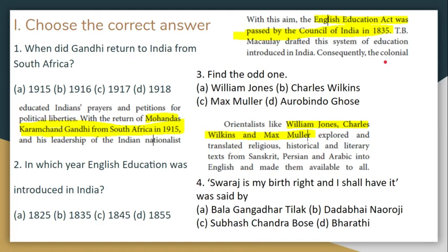Next, find the odd one out among Jones, Chalice, Wilkin, and Max Muller. These figures translated and explored religious texts. The odd man out is Aurobindo Ghosh — the others are orientalists. So the answer is only option D.